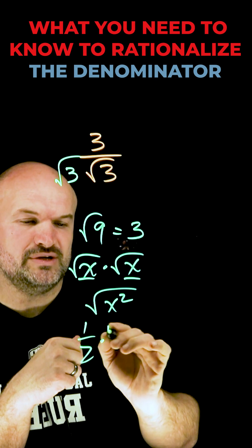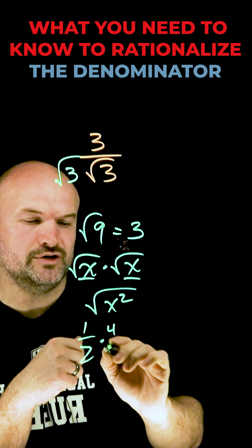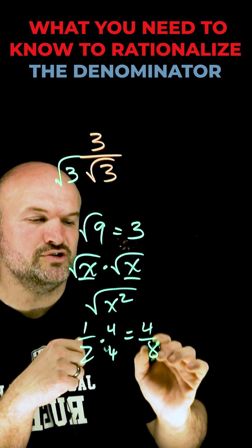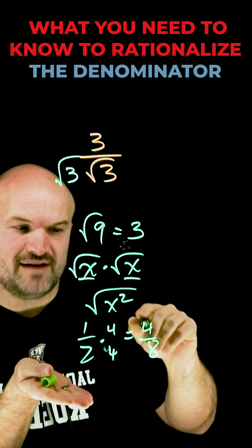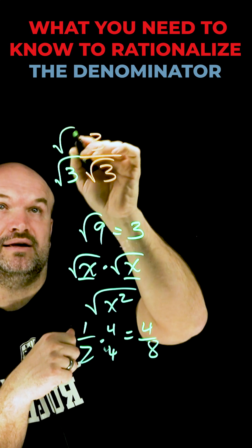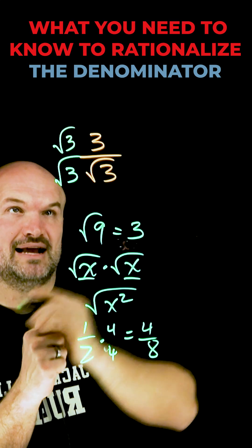And just remember, whatever you do in your denominator, you have to be able to do in your numerator so that you can produce what we call equivalent fractions. One half is equivalent to four eighths. So I'm going to multiply by the square root of 3 in my numerator as well as in my denominator.